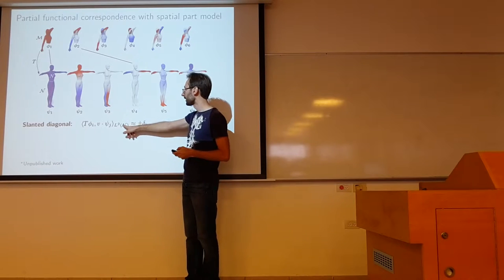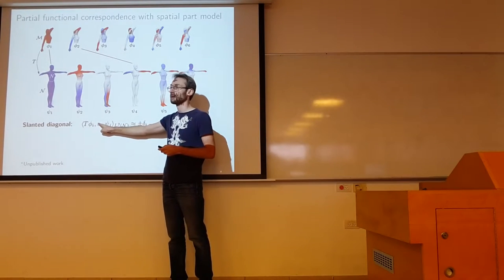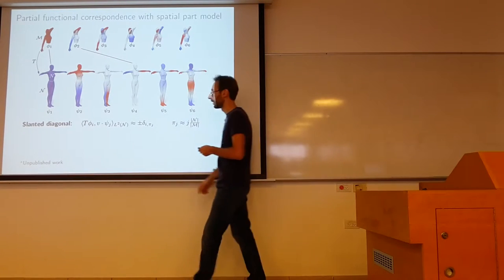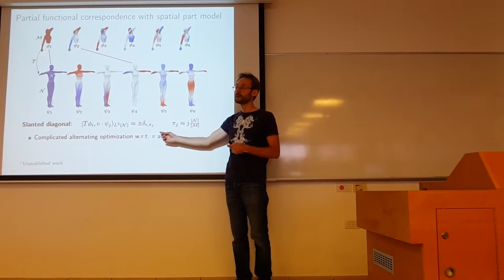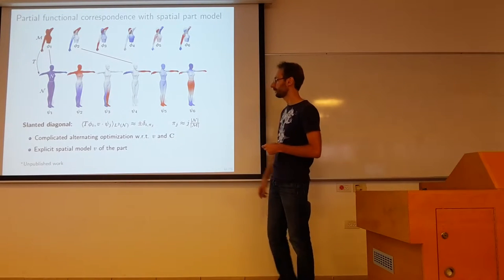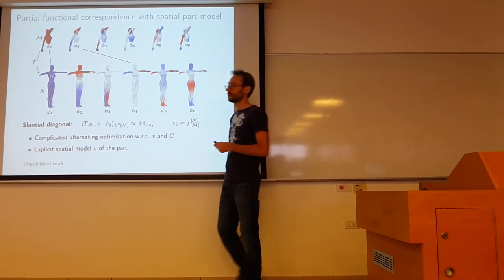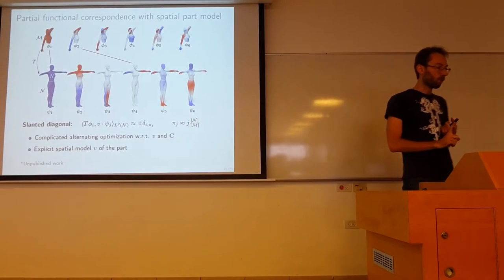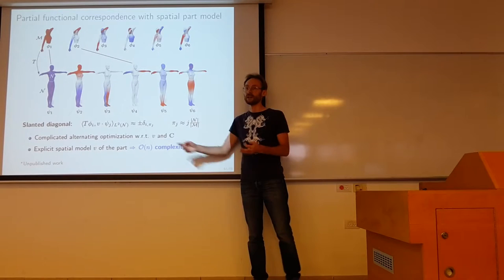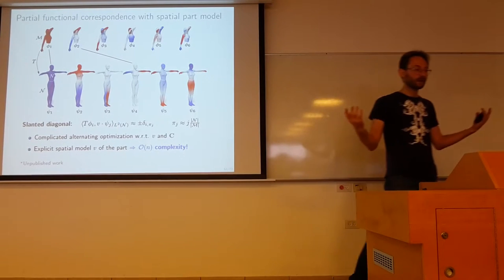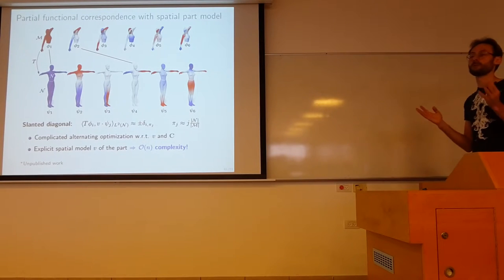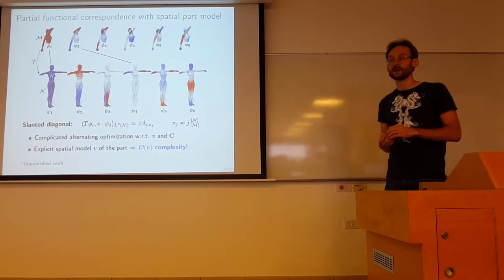Basically that's the way of writing that slanted diagonal matrix C. And basically we can write it as an inner product on the full shape, but now weighted by this indicator function of this part that we don't know of here. And optimization was with respect to this unknown part, and the functional correspondence that we represent with the matrix C. And this is complicated, this is a parametric explicit spatial model of V, which requires first of all alternating minimization with respect to C and V, and also the complexity here is order of n, number of points in the shape. So if the shape is large, it becomes huge, with thousands or millions of points. In practice it works maybe up to 10,000 points, otherwise it becomes very slow.